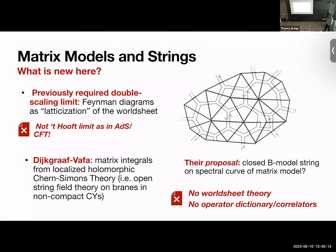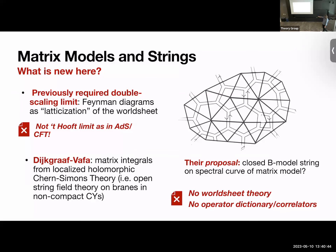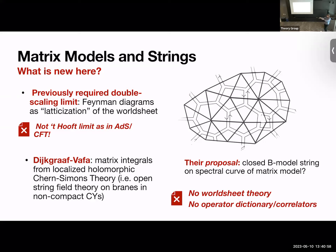We're not the first people to step away from that limit. Some of the first to think about the string interpretation of non-double-scaled matrix integrals was the work of Dijkgraaf and Vafa — those matrix integrals descend from open string field theory on branes. What we really want to get at today is to understand from the worldsheet point of view what the closed worldsheet theory is, and whether you can compute correlators in that theory and match them to correlators in the string theory. That's what we're trying to do that's hopefully a little new.